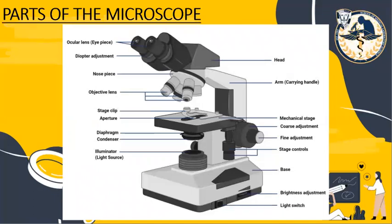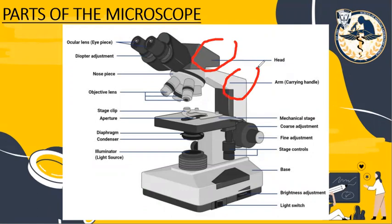When it comes to structure, a microscope is divided into three major parts. The first is the head, which carries the optical parts on the upper part of the microscope. The second is the arm, which connects the head and the base, and is also the part we hold when carrying the microscope from one place to another. The third is the base, which acts as the support of the microscope and carries the illuminators or light source.